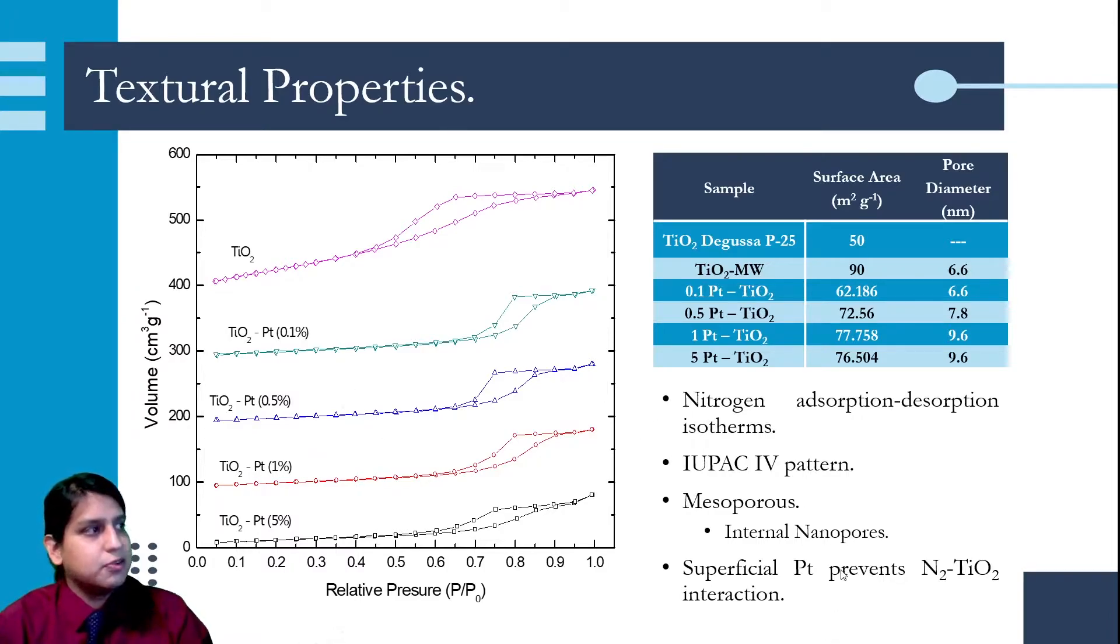As we can see, the superficial platinum prevents the nitrogen-titanium dioxide interaction, and we can see that the surface area and pore diameter increases as we increase the platinum load in the materials.